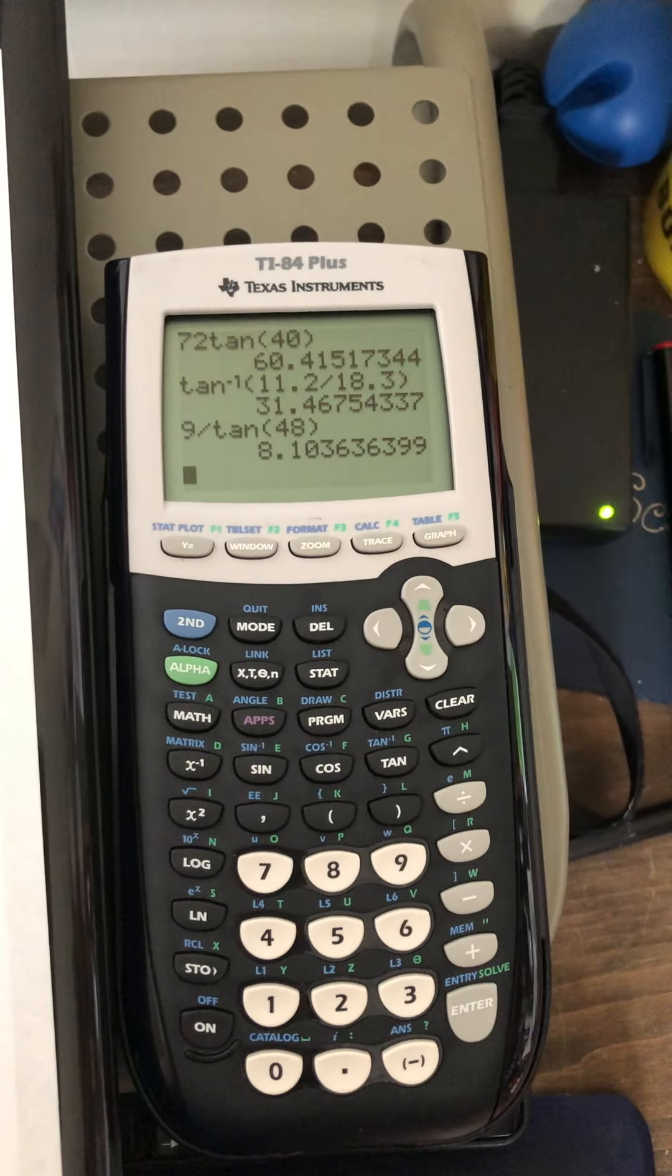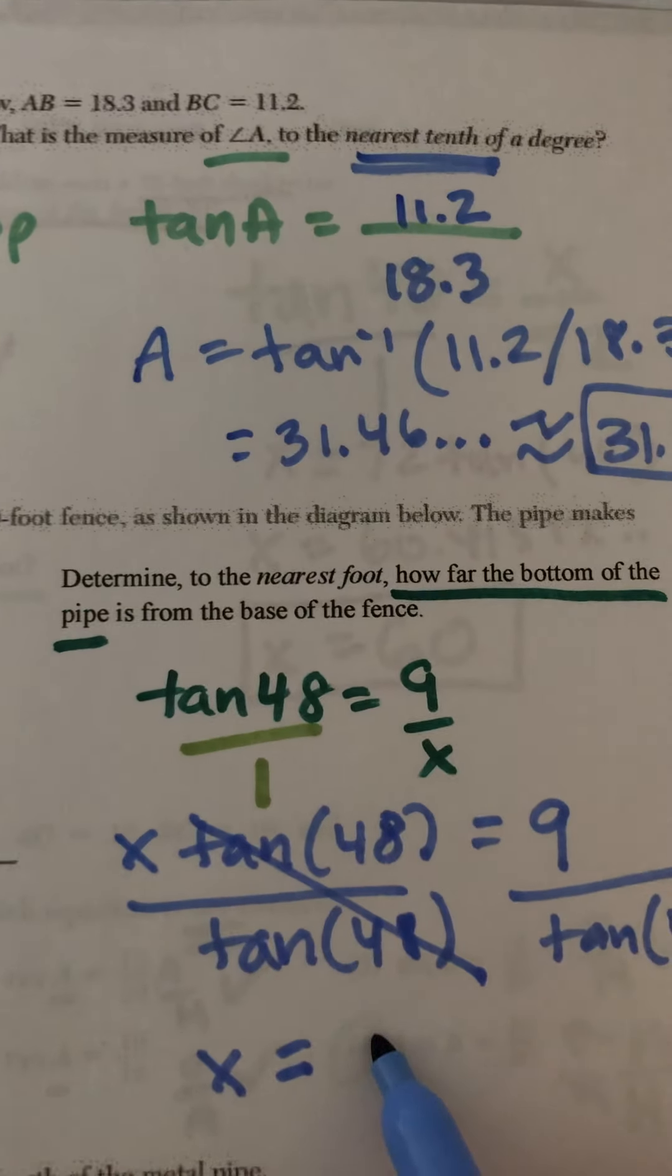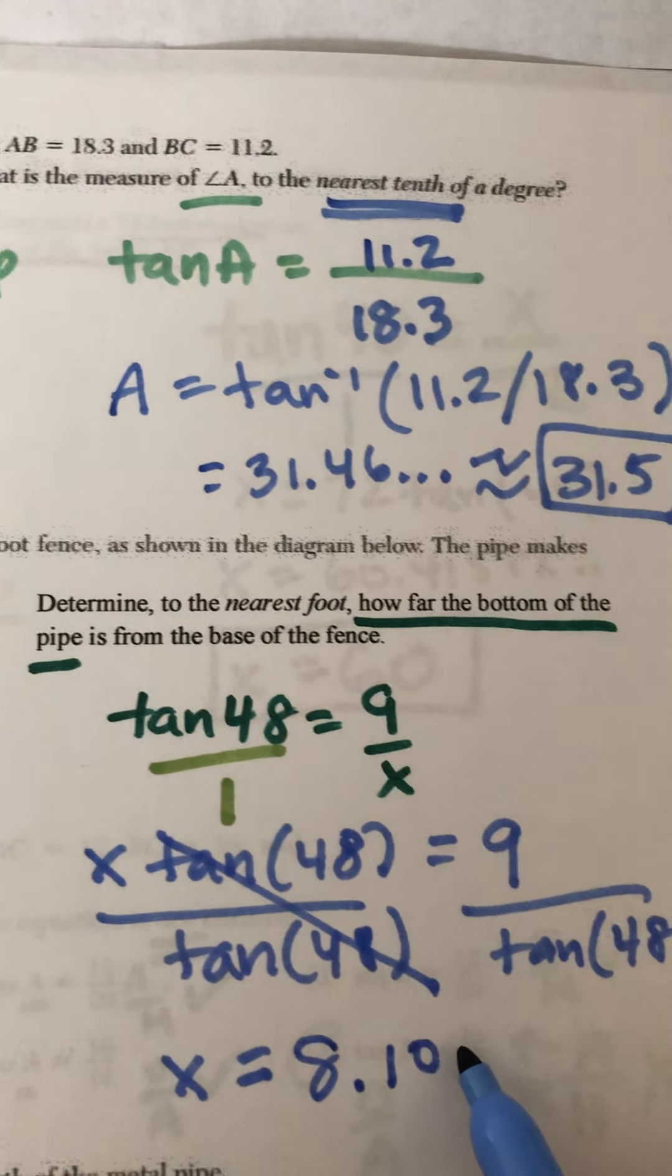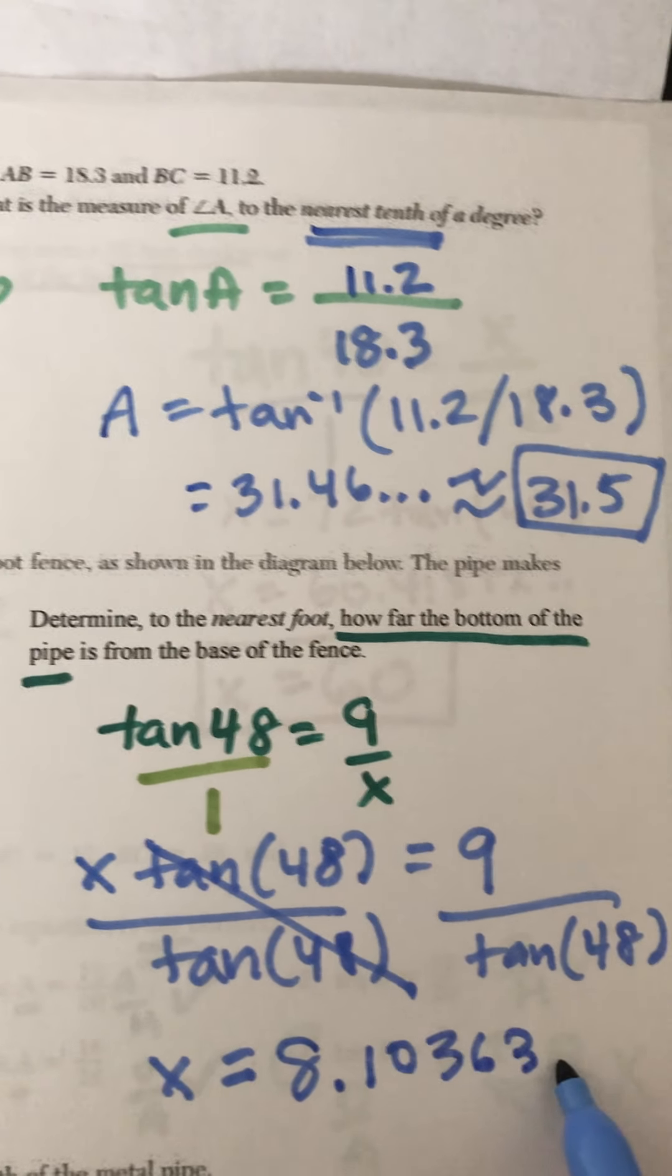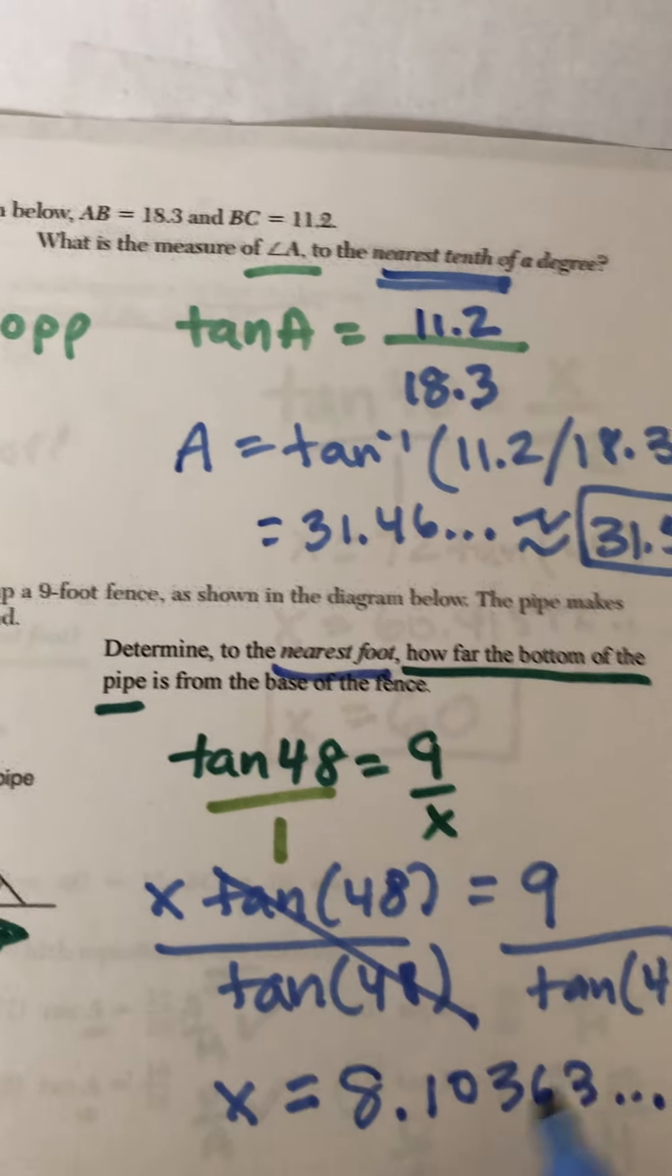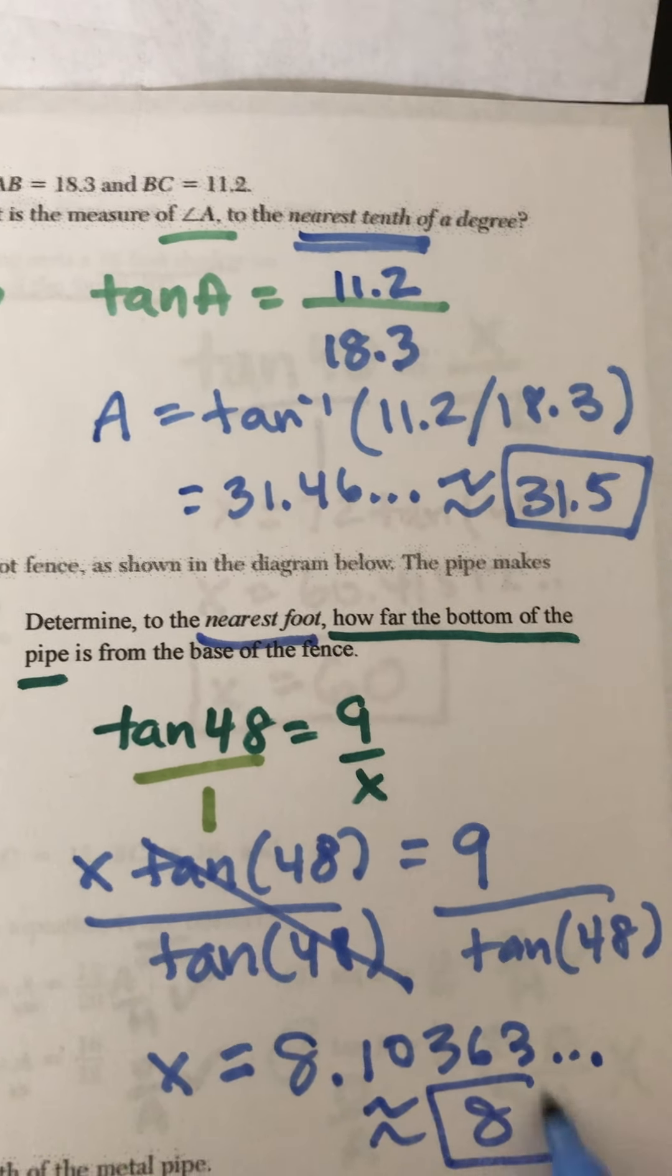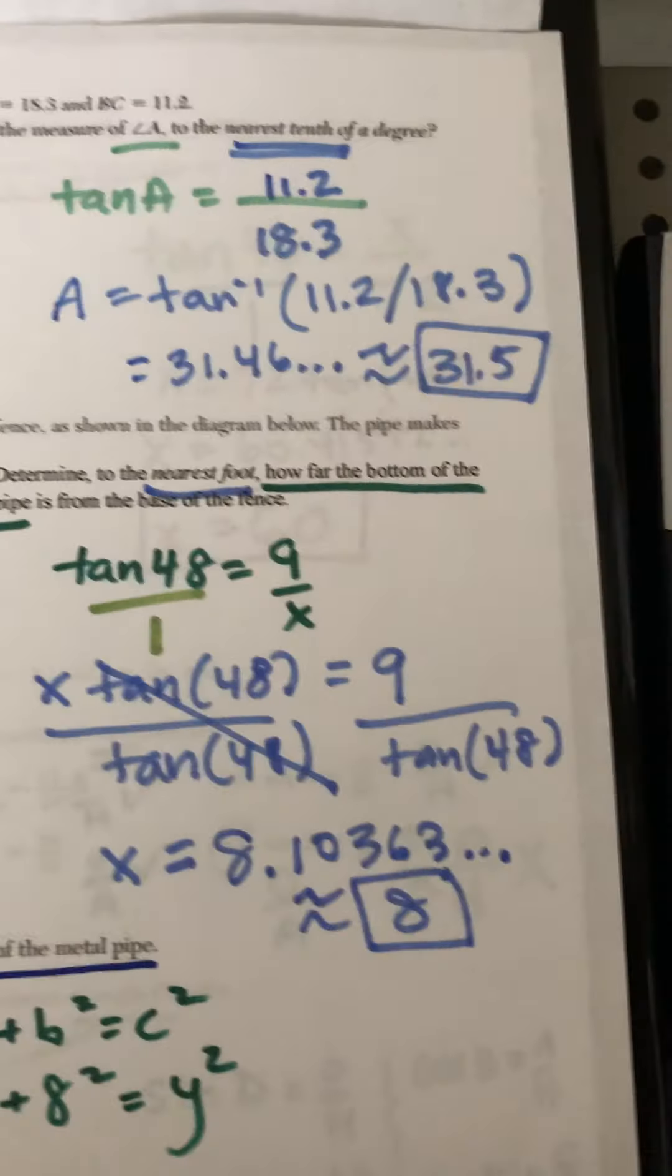Okay, 8.1036, dot dot dot, 8.10363, dot dot dot, nearest foot, 8 feet. That's the whole number.